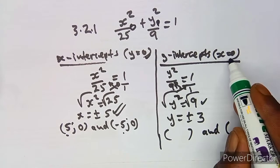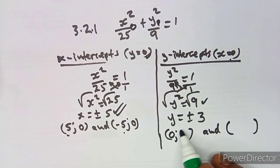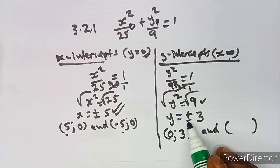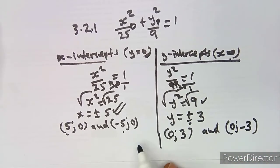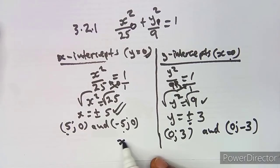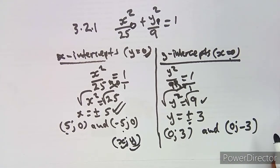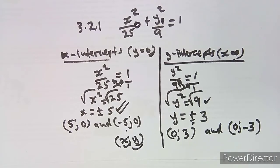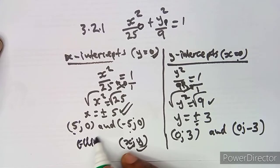When x = 0, we have y = 3, and another point where y = -3 when x = 0. A point is written as (x, y). Looking at these points, they are different from the x-intercepts, which means this is not a circle — this is going to be an ellipse.